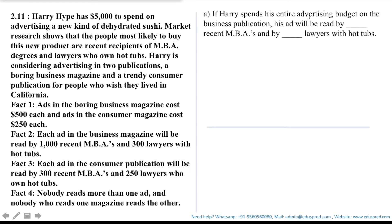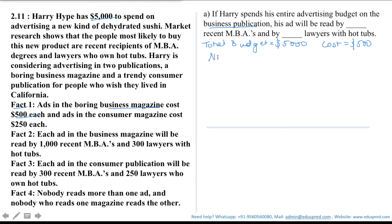If Harry spends his entire advertising budget on the business publication, his ad will be read by how many recent MBAs and lawyers with hot tubs? Harry is advertising only in the business publication and his entire budget is $5,000. According to Fact 1, each ad in the business magazine costs $500. So the number of ads he can publish is total budget divided by cost: 5,000 divided by 500, which equals 10 ads.